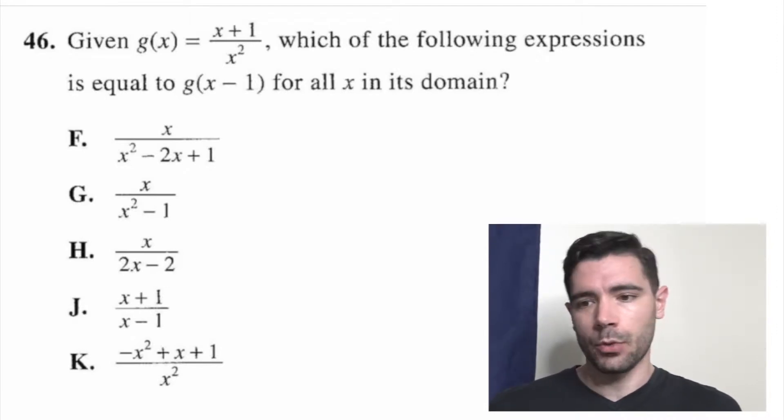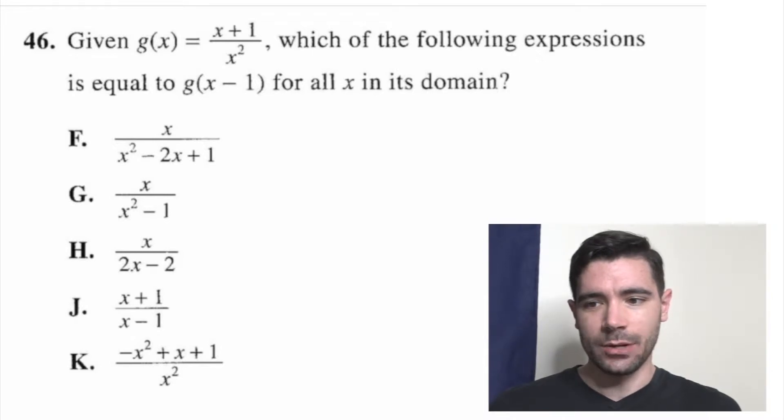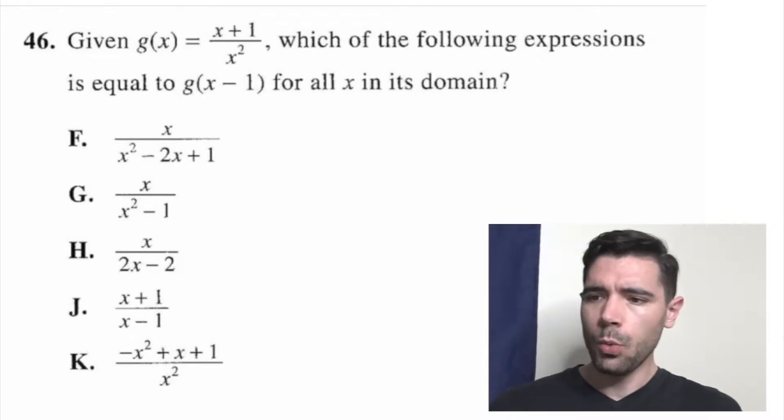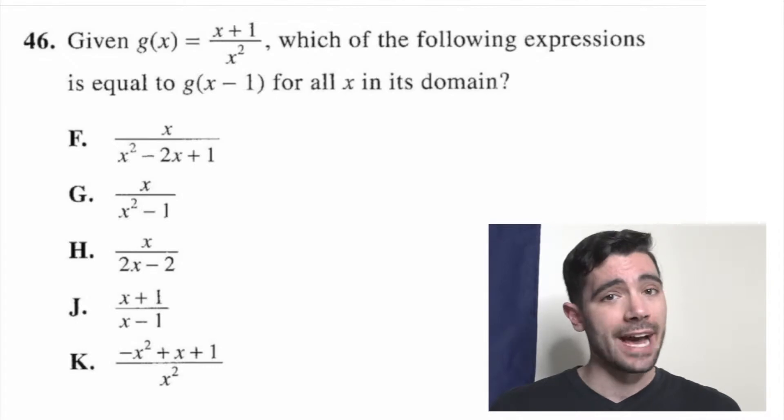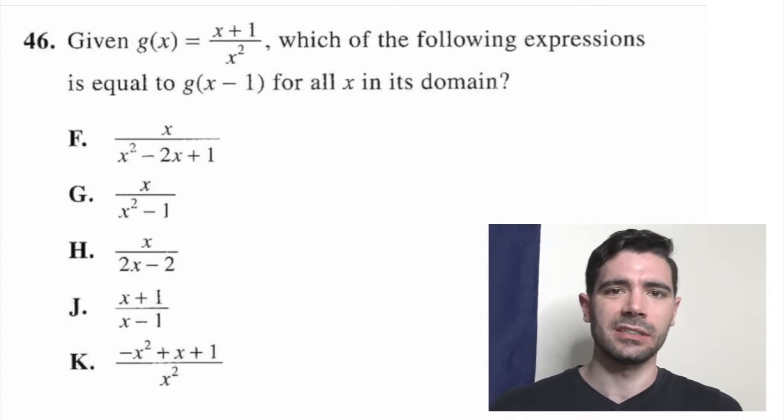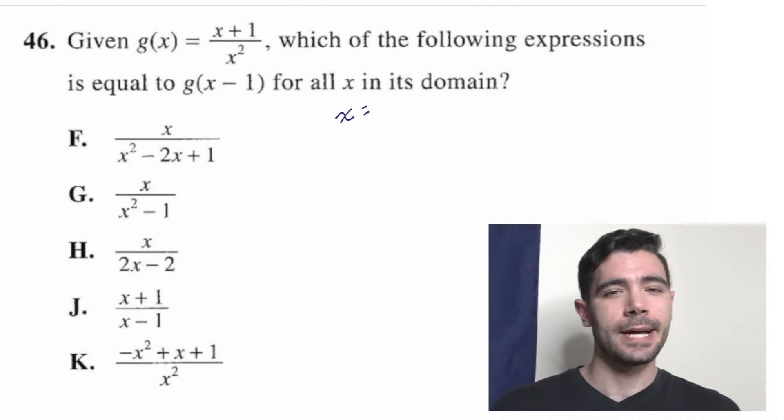Because we're getting in there. It reads, given g(x) equals (x+1) over x squared, which of the following expressions is equal to g(x-1) for all x in its domain? Alright, well I see variables in all the answer choices, so perhaps I could plug in a number. How about 2? I like that number.